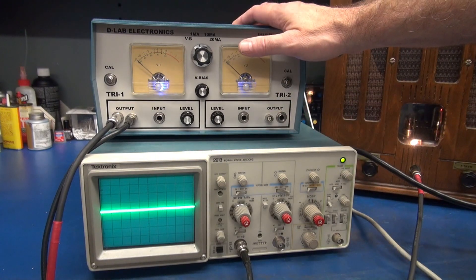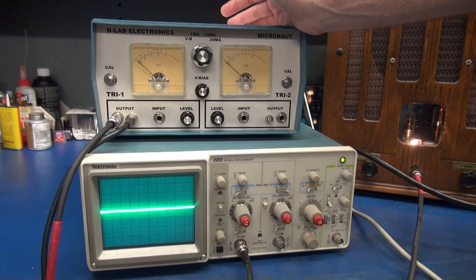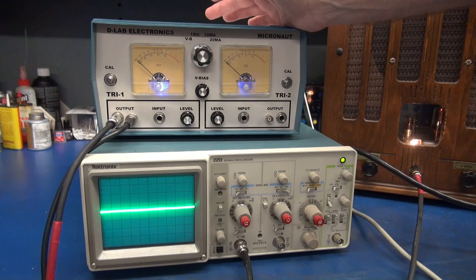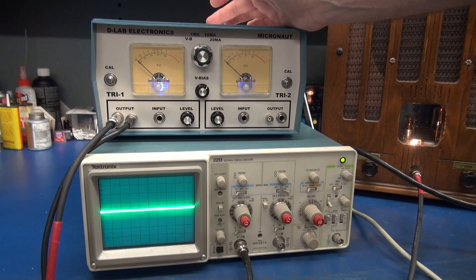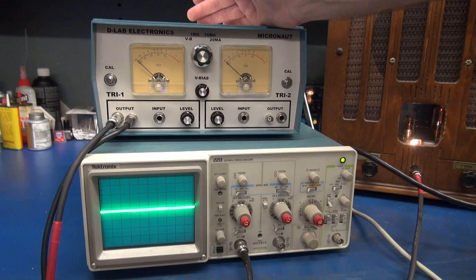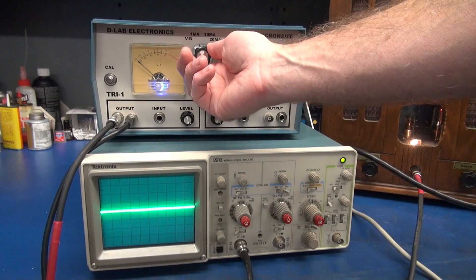The Micronaut is designed to check a series of tubes. It has a seven pin socket, an eight, and a nine. The seven pin is for 6AV6s, 6BK6s, and 6AT6s. The eight pin is for 6SL7s and 6SN7s. And then the nine pin will do your 12AX7, 12AT7, and 12AU7. Everything is determined by the selector switch.